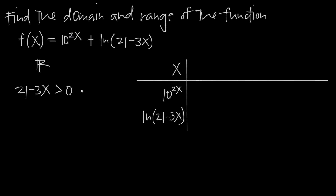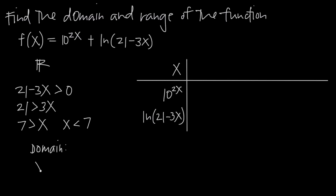The only issue is with the natural log term where the argument has to be greater than 0. So we solve this inequality for x: add 3x to both sides to get 21 greater than 3x, then divide both sides by 3 to get 7 greater than x, or x less than 7. Note it's not x less than or equal to 7 — if x were 7, we'd get 21 minus 21 equals 0, and natural log of 0 is undefined. So the domain is x less than 7.